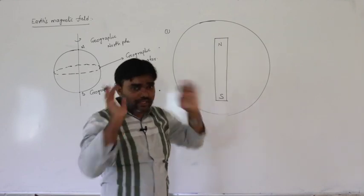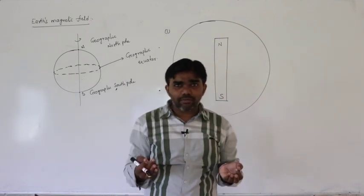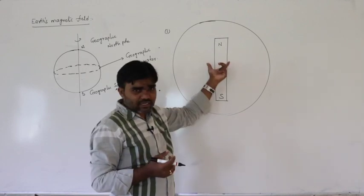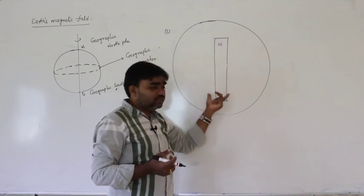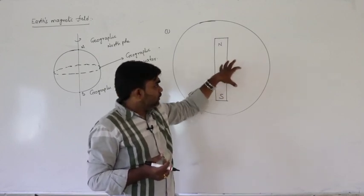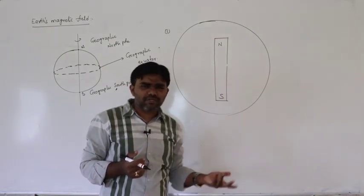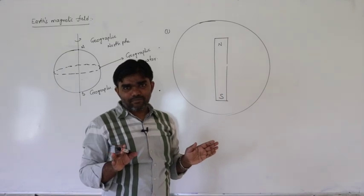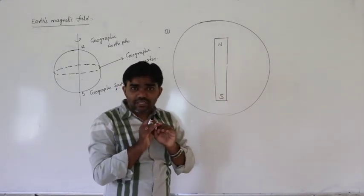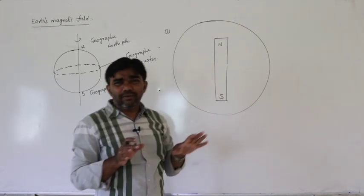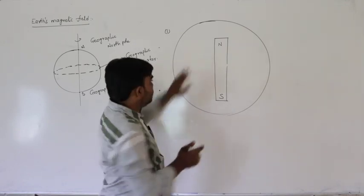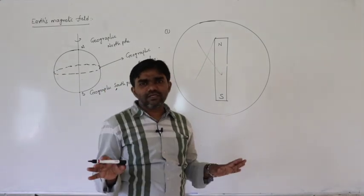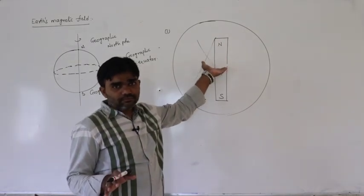That is the major contradiction for this assumption. The inner core of the Earth consists of metals like iron, cobalt, and nickel. But at the huge temperatures inside the Earth, these metals cannot sustain magnetic properties — the magnetic properties are banished due to high temperatures. So there is no magnet at the center of the Earth, and this assumption is wrong.